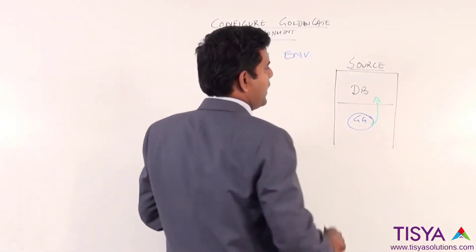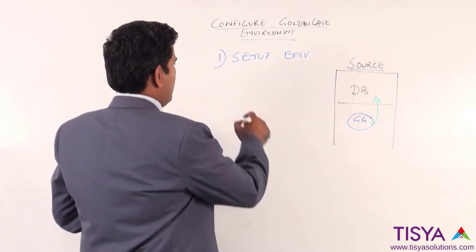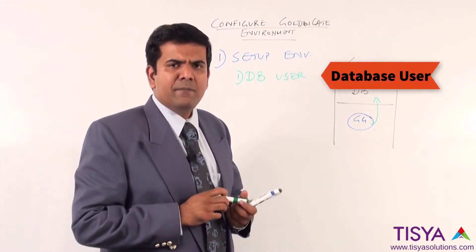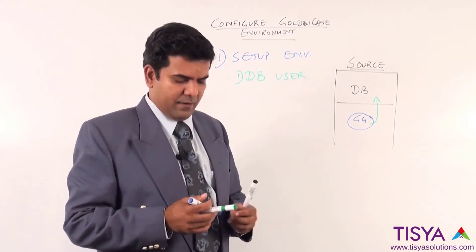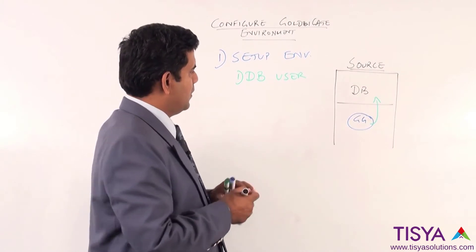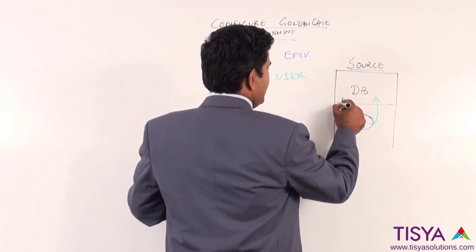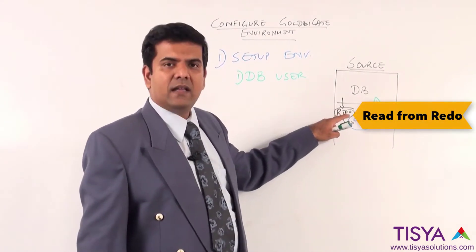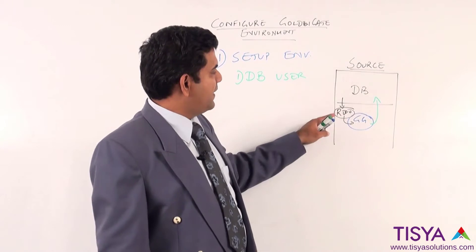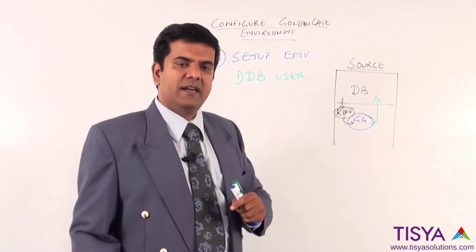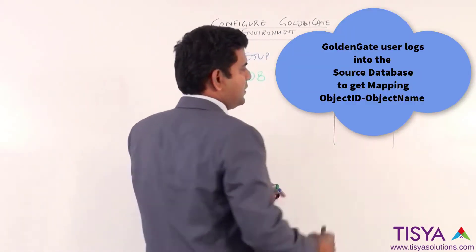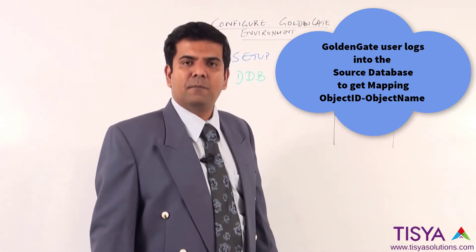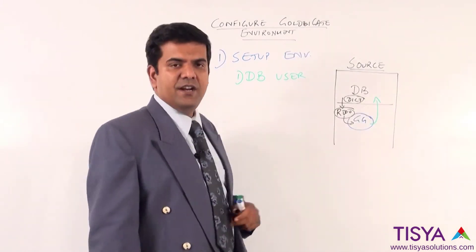The GoldenGate software would have to access the database, for which a DB user would have to be created. GoldenGate is going to read from redo log files that are generated, and whenever the redo is being looked at, it will only have information about an object ID. The information about the object ID and the object name will be available inside the dictionary, so GoldenGate would have to log into the database to get the object name, which is why we need to create a user.